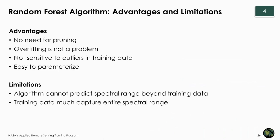Advantages of random forests include: no need for pruning of generated trees; overfitting is not a problem, unlike in other decision tree algorithms; it is not sensitive to outliers in the training data; and it is easy to parameterize. A key limitation is that the algorithm cannot predict spectral ranges beyond the training data, which reiterates the importance of capturing the full spectral range in training data.